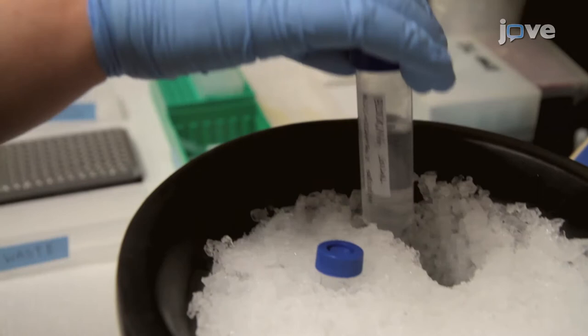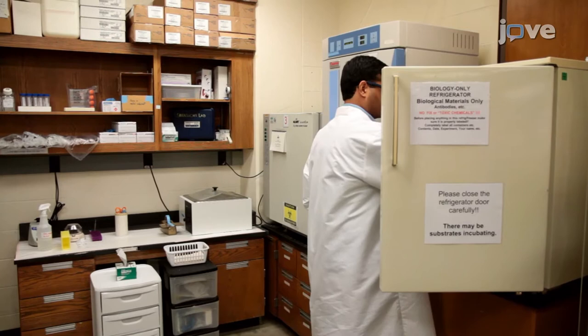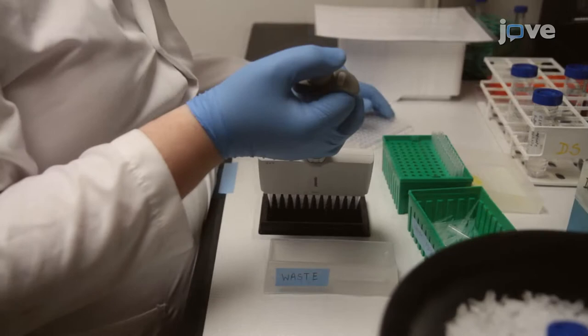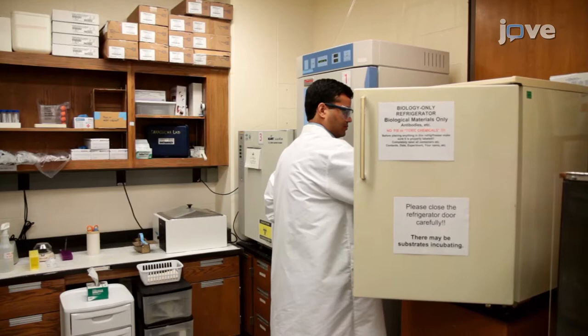After blocking the cells according to the text protocol, apply 100 microliters of primary antibody solution to each well. Cover the plate and incubate at 4 degrees Celsius overnight. After washing the cells three times for 7 minutes each, apply secondary antibody, place the cells in the dark, and incubate at room temperature for 90 minutes. Following another three washes, cover the plate and store it at 4 degrees Celsius until imaging.